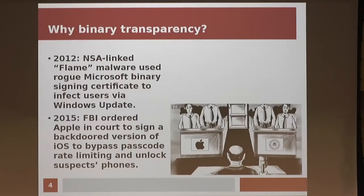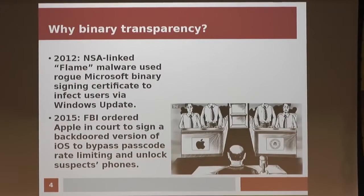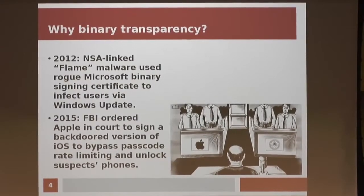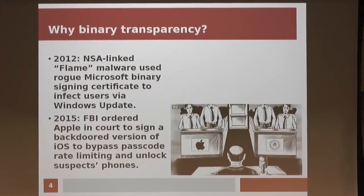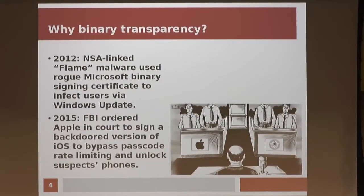In 2015, there was the famous case where the FBI wanted to unlock or decrypt an iPhone of a suspected terrorist. The FBI got a court order against Apple to make them sign a backdoor version of iOS that could be put onto the iPhone to bypass the passcode and rate-limiting features, so the FBI could make thousands of guesses per second to decrypt that person's iPhone.